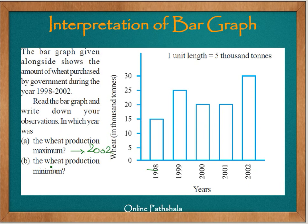In which year was the wheat production minimum? We can quite easily say that the wheat production was minimum in the year 1998. Now, what exactly was the wheat production in 2002? The bar length is coinciding with the number 30, which is 30 in 1000 tons — so the wheat production was 30,000 tons.